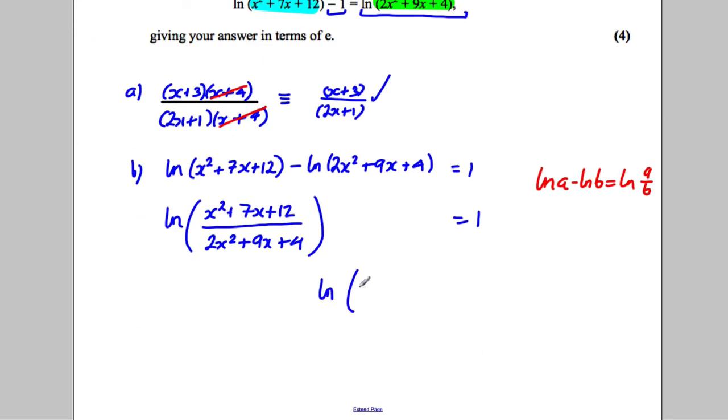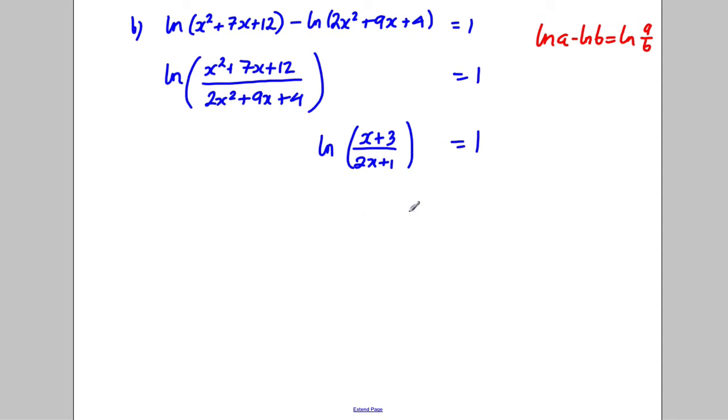This now could be written as my simplified version, so I could write that the natural logarithm of x add 3 divided by 2x add 1 is equal to 1. I could take exponentials of both sides.